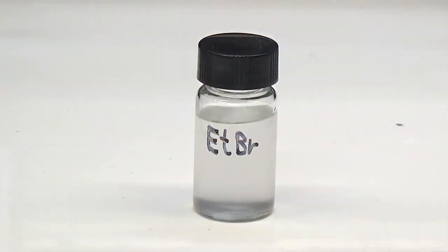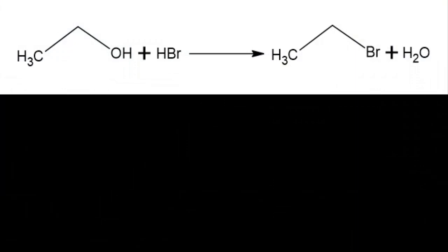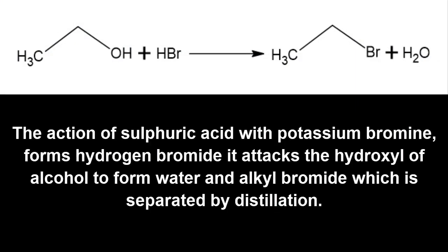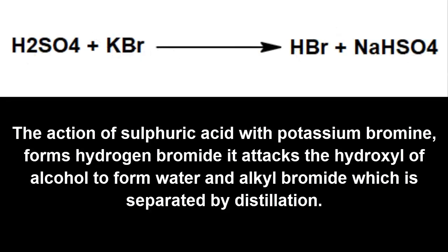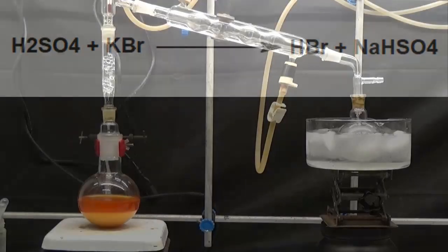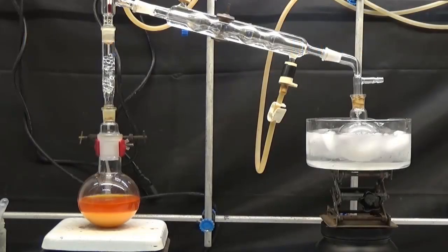As a second step, we will prepare ethyl bromide. For the preparation of ethyl bromide, we will react hydrobromic acid with ethanol. The action of sulfuric acid with potassium bromide forms hydrogen bromide. It attacks the hydroxyl of alcohol to form water and alkyl bromide which is separated by distillation.